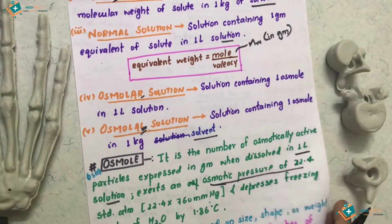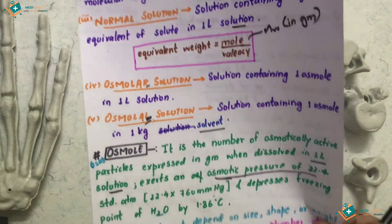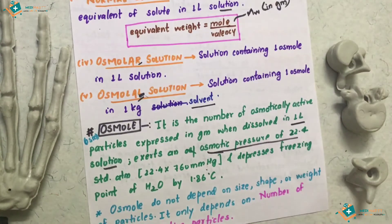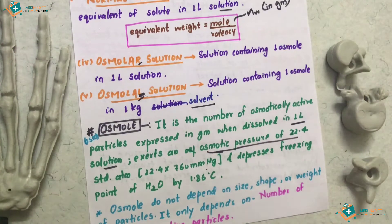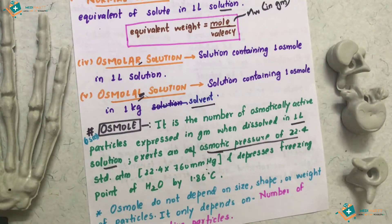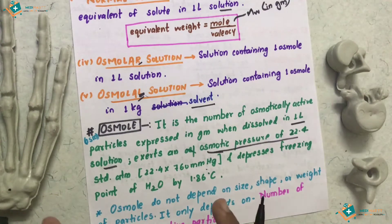Osmol never depends on the size, shape, and weight of the particles. Rather, it basically depends on the number of particles, because the semipermeable membrane allows all osmotic active particles to cross under the defined conditions.